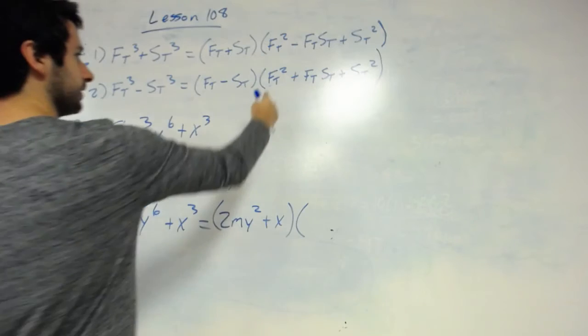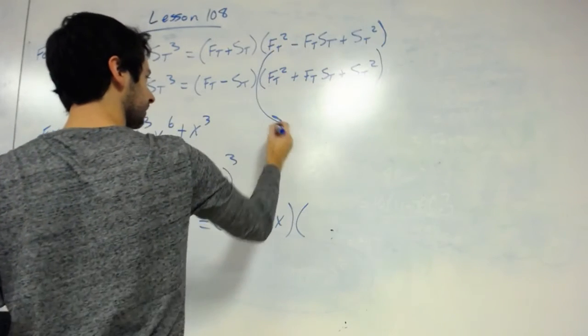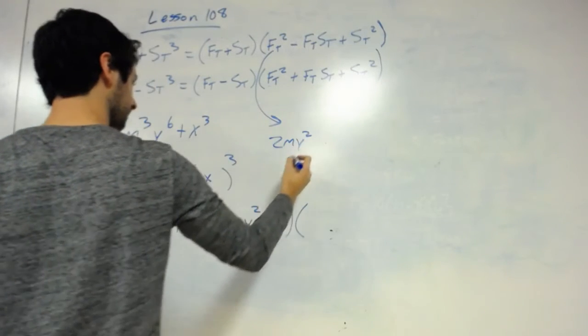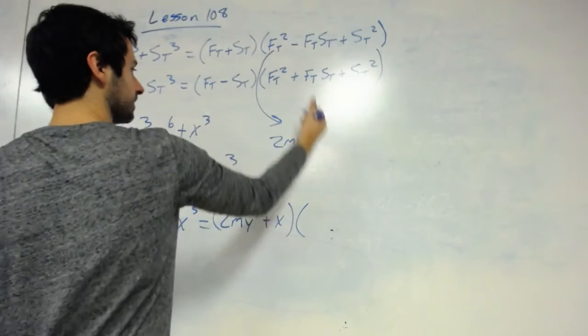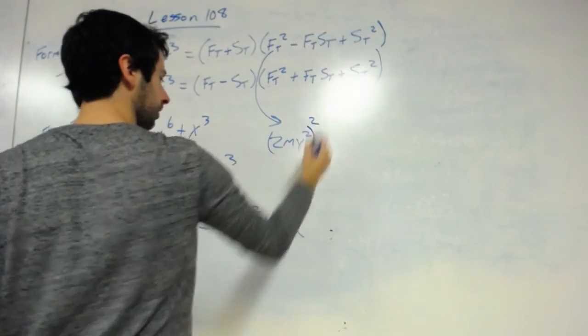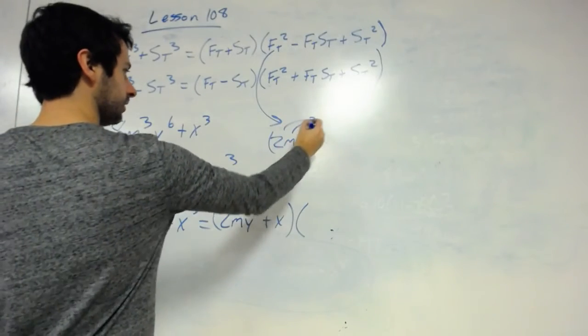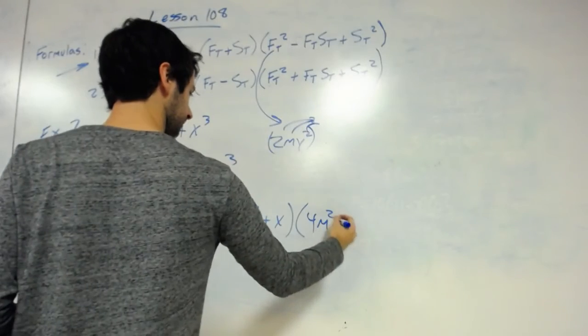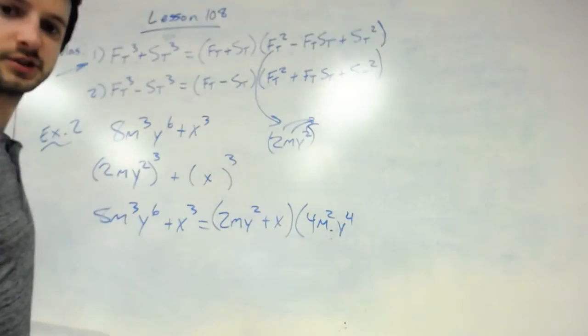Alright, now let's talk about this part. When I have 2my squared, and it says the first thing is squared, that means the whole part of the first thing is squared. So I actually have to distribute that to all three. So 2 squared would be 4m squared, and that'd be y to the fourth. So you do have to square everything.